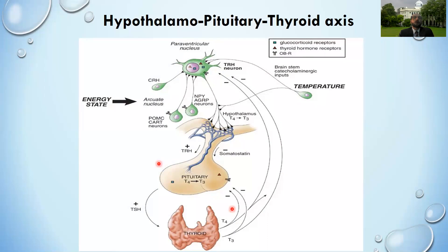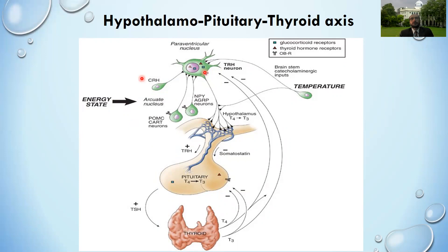T4 and T3 are formed by the thyroid under the influence of thyroid-stimulating hormone (TSH) secreted by the pituitary gland, which in turn is released under the effect of thyrotropin-releasing hormone (TRH) from the hypothalamus. When T3/T4 are deficient, TRH from the hypothalamus stimulates TSH secretion, which in turn stimulates thyroid hormone synthesis and secretion. When they are in sufficient quantity, negative feedback stops TRH, TSH, and thyroid hormone synthesis.